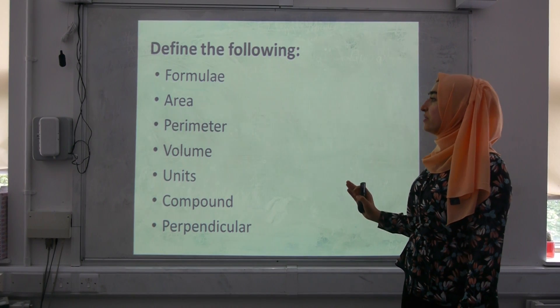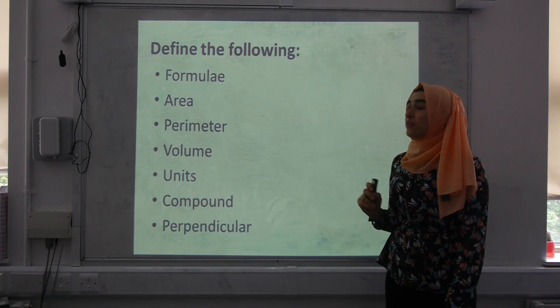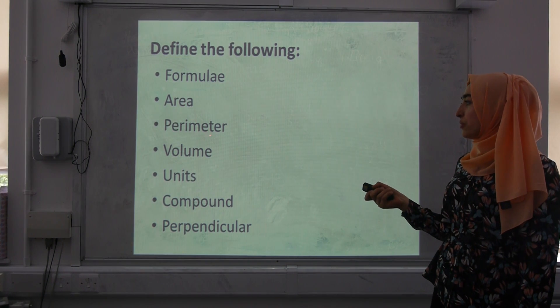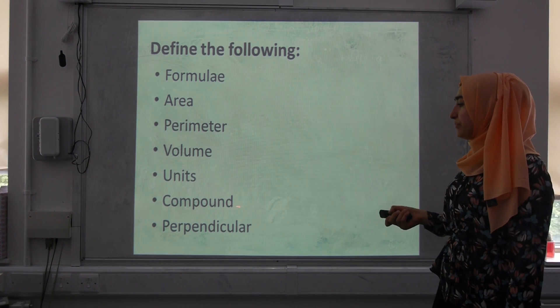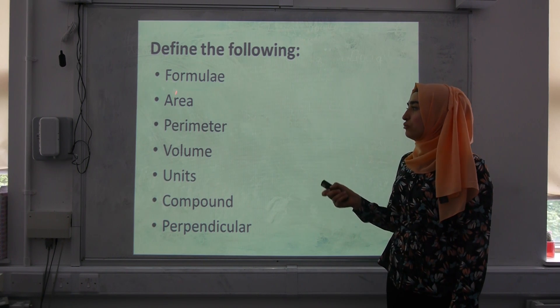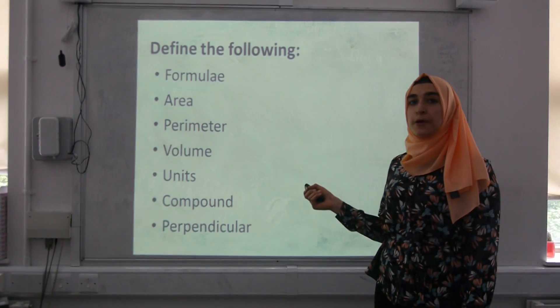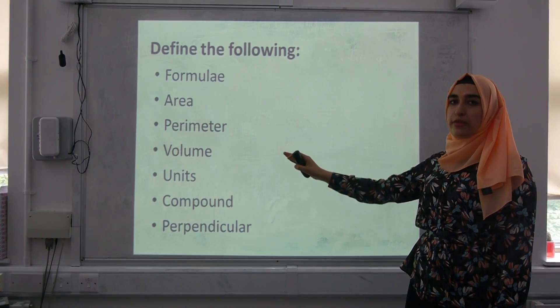We'll start off by looking at some keywords and what I want you to do is define them and rewrite them using your own words. You've got formula, area, perimeter, volume, units, compound, and perpendicular. You should have seen these words before, but I just want you to come up with the definitions and write them down in your book, and please don't forget to highlight them.